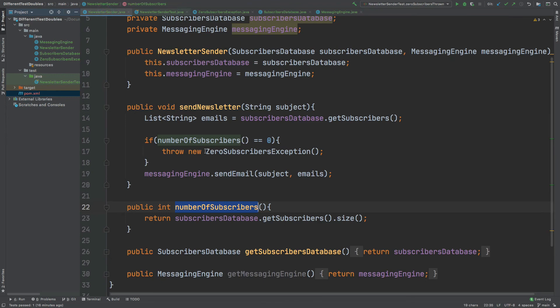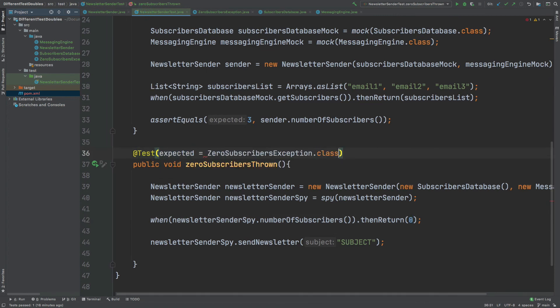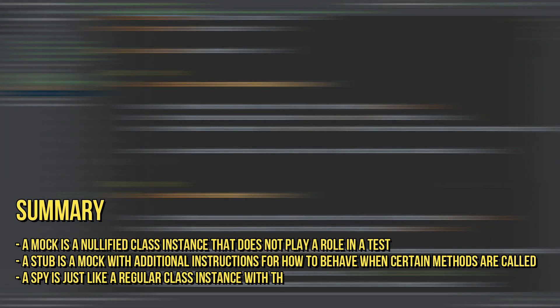We change the test to expect that exception. In summary: a mock is a nullified class; a stub is a mock with the addition of controlling responses to certain method calls; and a spy is like any other instance of an object but provides the option to stub some of its methods to respond in a certain way.